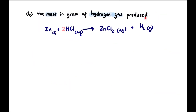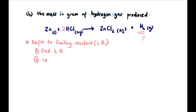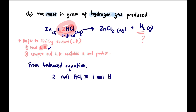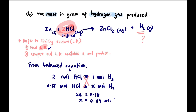Now for the second part of the question — finding the mass of hydrogen gas produced. We must refer to the limiting reactant because the limiting reactant decides how much product is formed. The moles of HCl available is 0.18 moles. From the balanced equation, 2 moles of HCl produces 1 mole of H₂. If we have 0.18 moles of HCl available, cross-multiplying: 2x = 0.18, so x = 0.09 moles of H₂ produced.